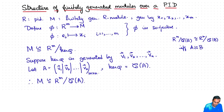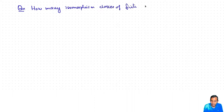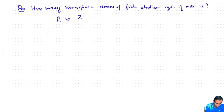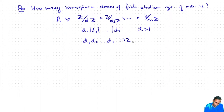You can ask, for example, how many finite abelian groups are there of order 12. We want A isomorphic to Z mod d₁Z cross ... cross Z mod d_r Z, where d₁ divides d₂ divides ... divides d_r, each d_i is greater than 1, and the product d₁·d₂·...·d_r equals 12. If you think about this you will see that there are only two possible solutions.